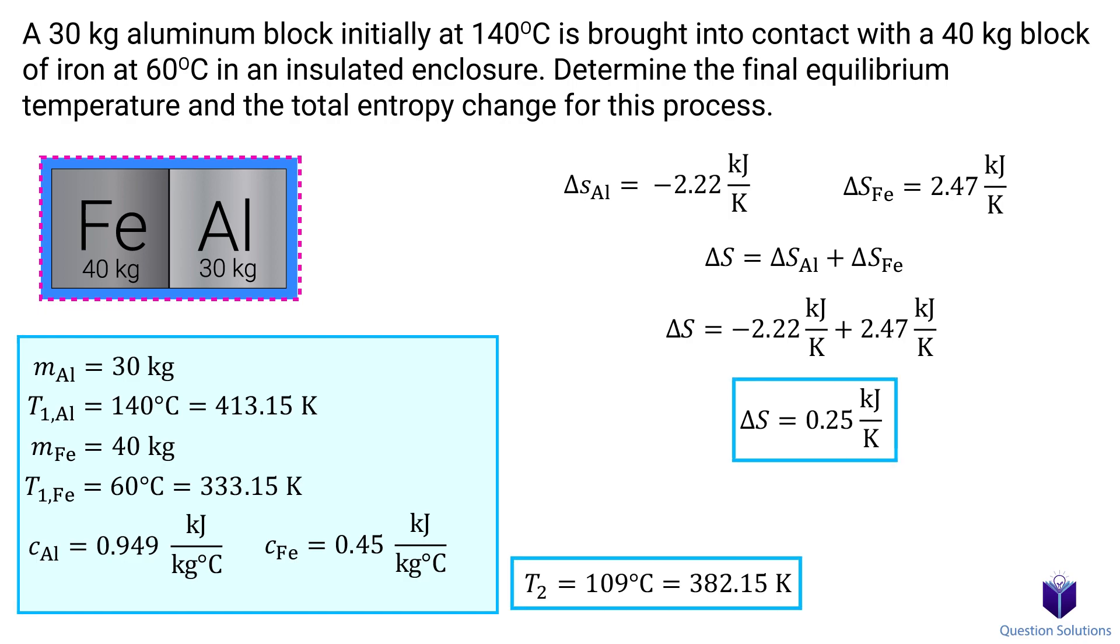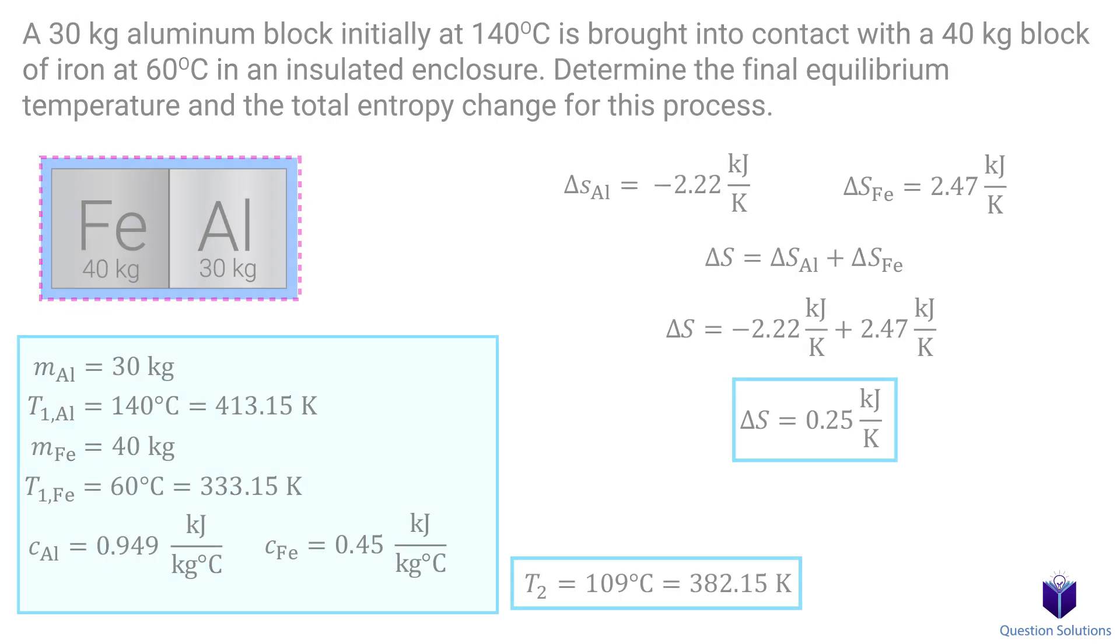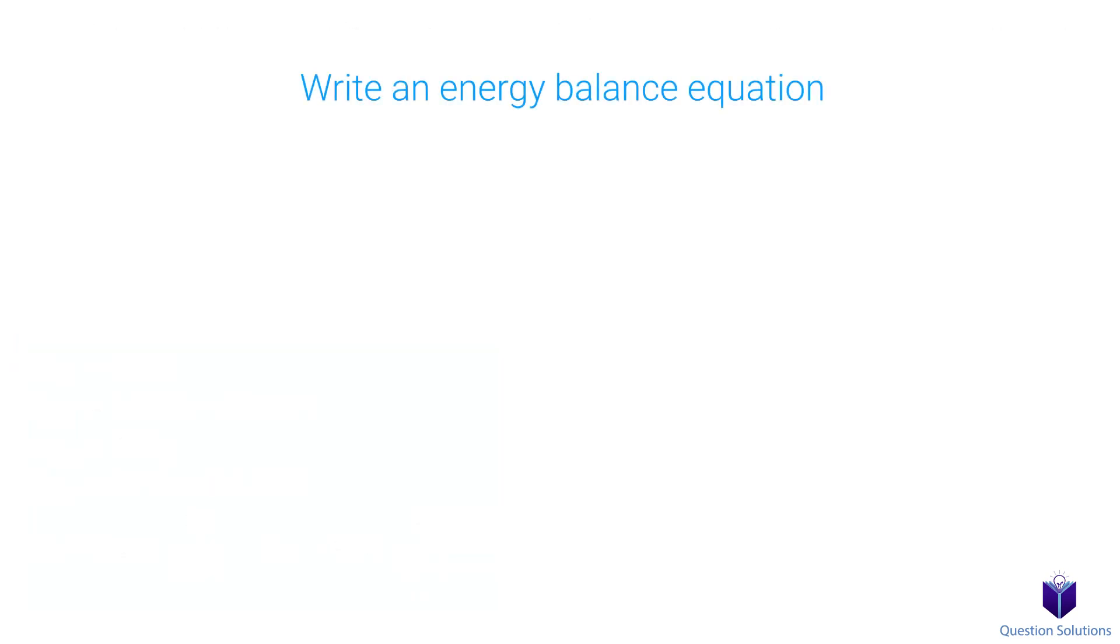This is usually how most problems involving entropy change in incompressible substances are solved. Write an energy balance equation, and then using it, find the equilibrium temperature. Once you have both temperatures, it's just a matter of plugging in values into this equation and solving for the entropy change. Thanks for watching, and best of luck with your studies.